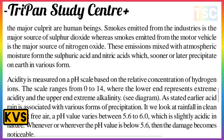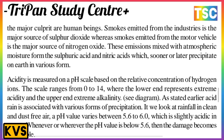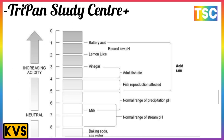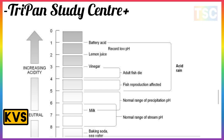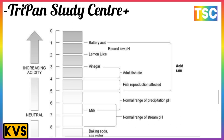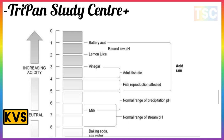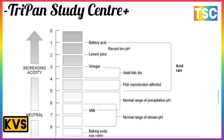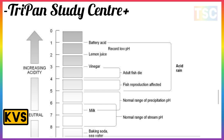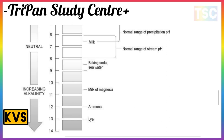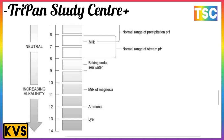Wherever the pH value is below 5.6, the rain is considered dangerously acidic. On the pH scale, 0 to just below 7 is acidic — with 0 being most acidic — and 7 is neutral. Examples of acidic substances include battery acid, lemon juice, vinegar, and these conditions affect fish. A pH of 7 is neutral, as in pure water.